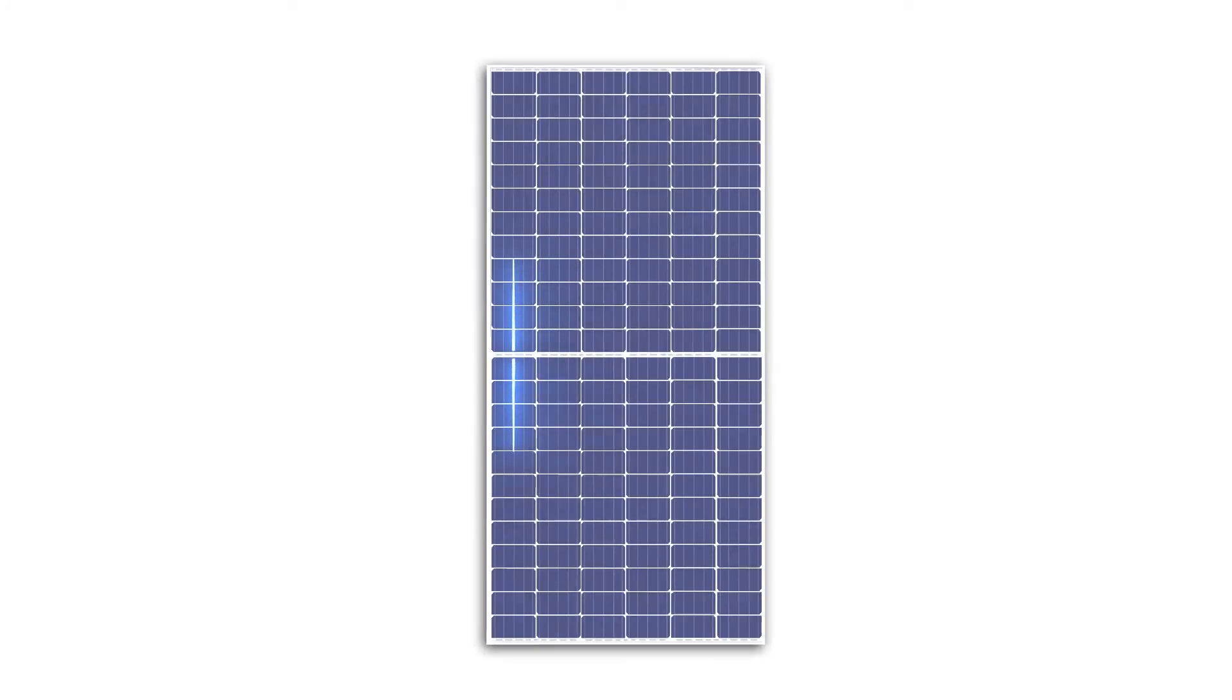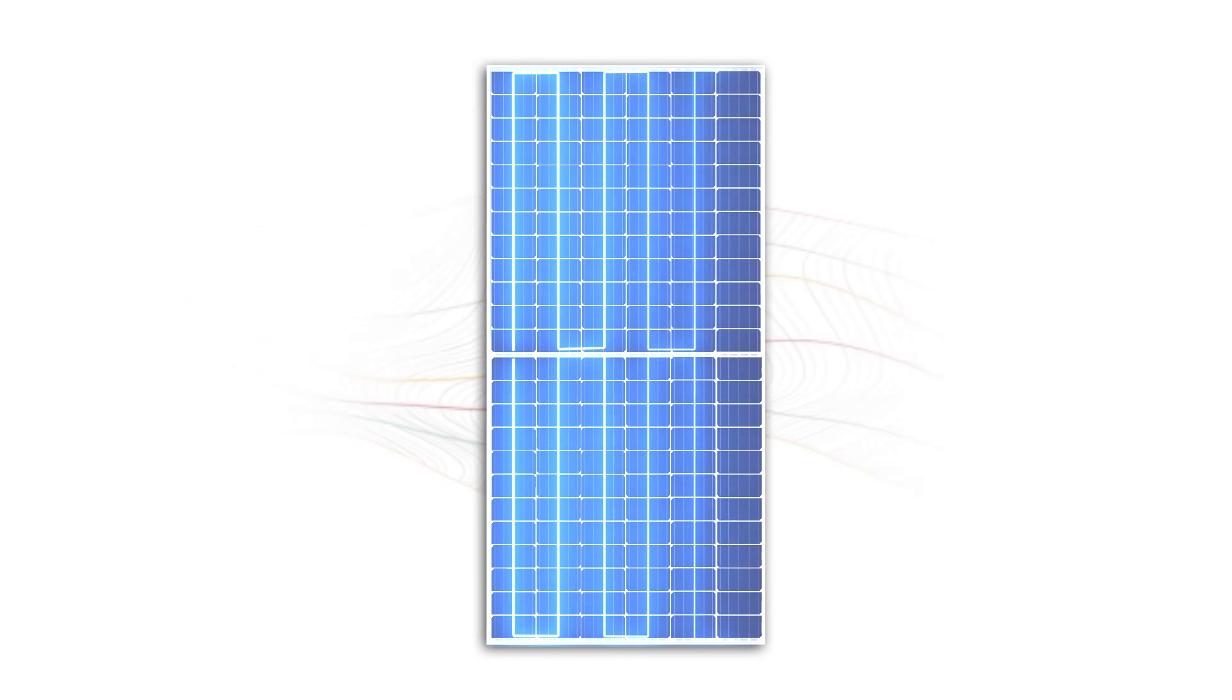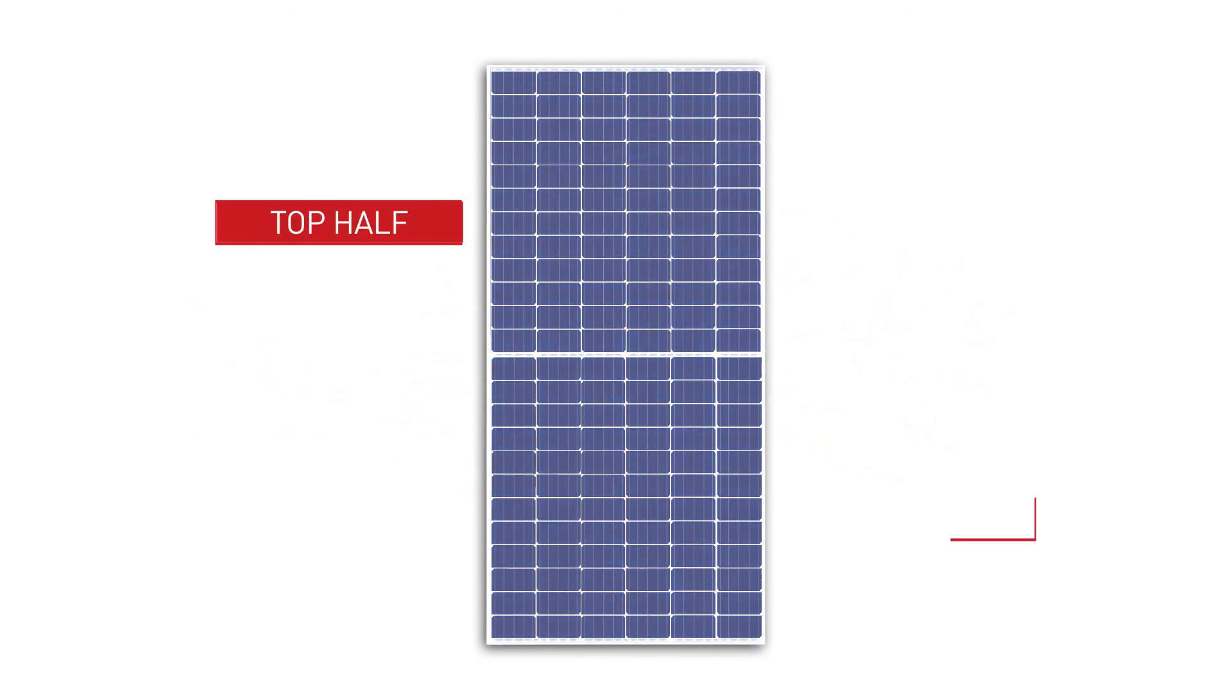Once the half-cells have been connected in strings, the module is laid out in two twin sections, with an equal number of cells connected in a series, appearing as a top and a bottom half.